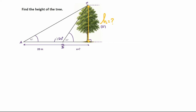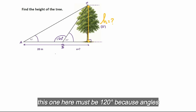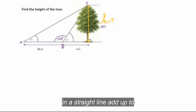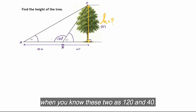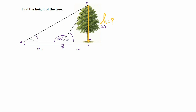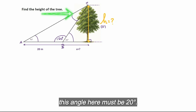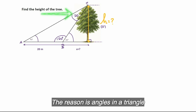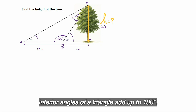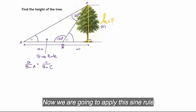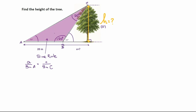Here's the second method of doing this question. We know that if this angle is 60 degrees, this one here must be 120 degrees because angles on a straight line add up to 180 degrees. When you know these two as 120 and 40, this angle here must be 20 degrees — the reason is that interior angles of a triangle add up to 180 degrees.